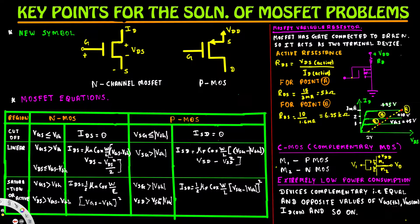Another very important circuit is CMOS — Complementary MOS — where two different MOSFETs are connected together. M1 represents the P-MOSFET and M2 represents the N-MOSFET. CMOS is extremely useful because of its very low power consumption, and it is used in most digital circuits. The circuit uses equal and opposite values of VGS, V-threshold, VGS-on, ID-on, and so on. That's all we need to know about MOSFETs to solve problems. Thanks for watching.